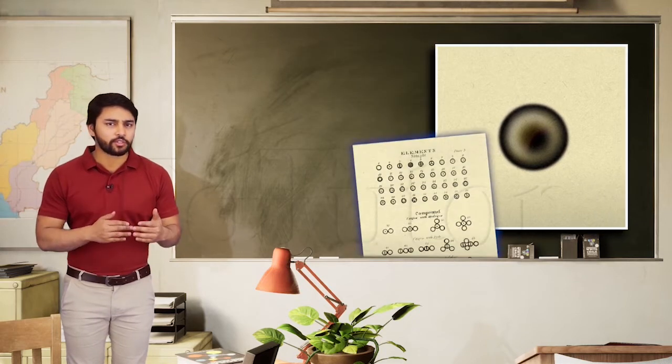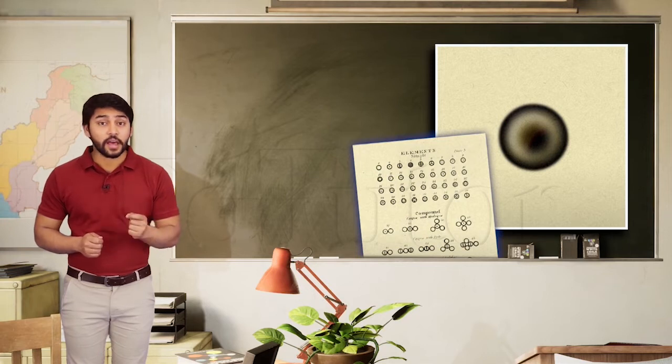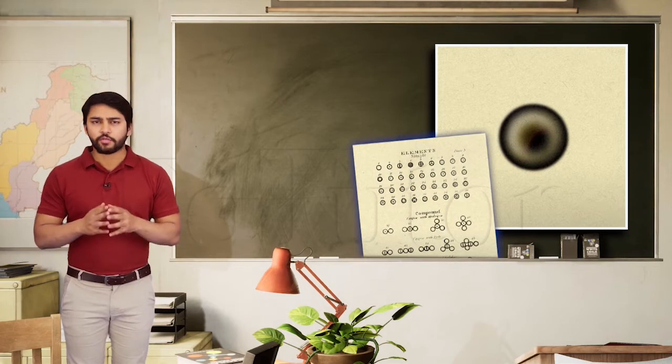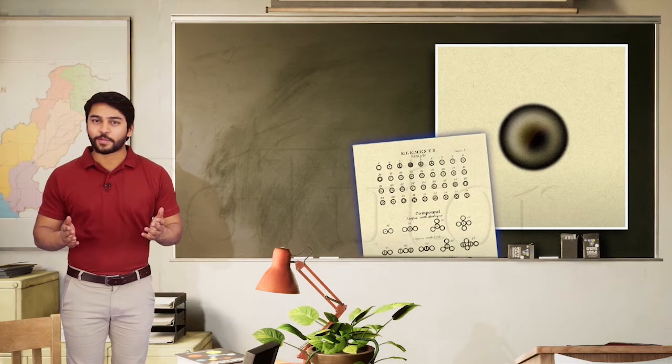In the 20th century, using X-rays, it was discovered that the diameter of an atom is 2 into 10 to the power minus 10 meters, which is equal to 0.2 nanometer. Pretty small, right?